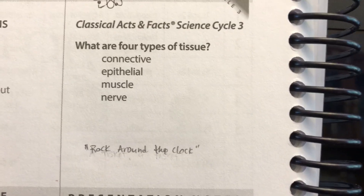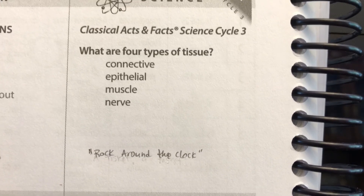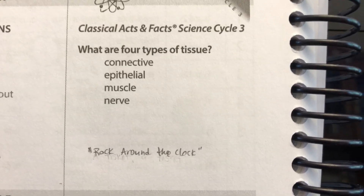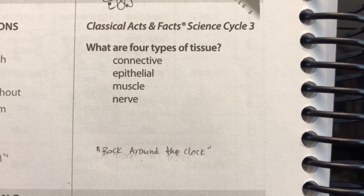What are four types of tissue? Four types of tissue are connective, epithelial, muscle, and nerve.